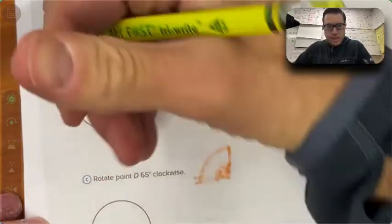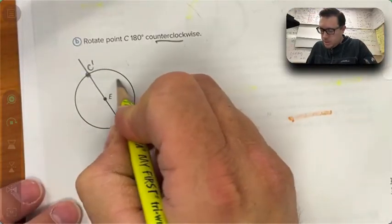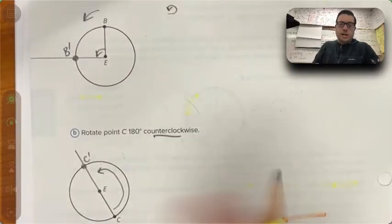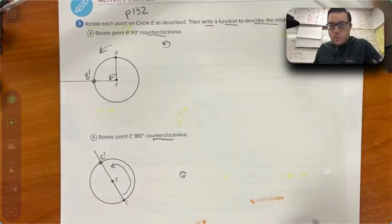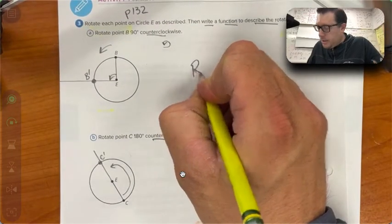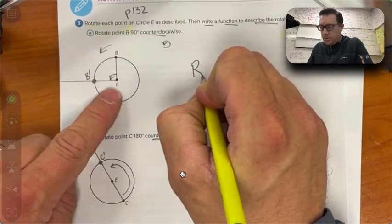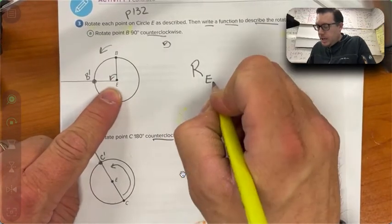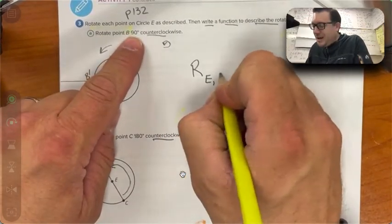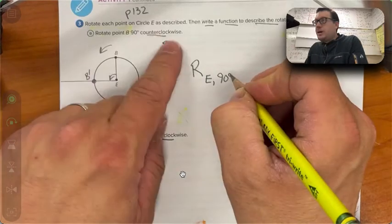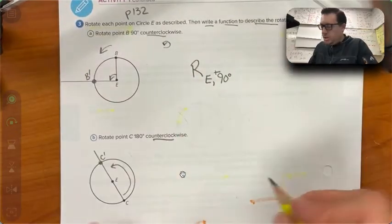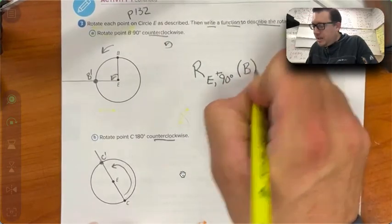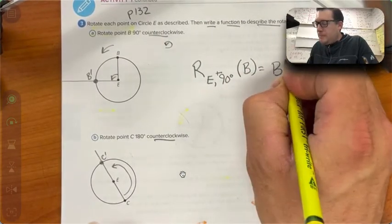I'm going to cut the video here. I'm going to say you need to do part C now. I need to add the notation. For the first one, R, it's a rotation around point E, and it's rotating 90 degrees. Because it's counterclockwise, it's a positive 90 degree rotation of point B, and it's going to go to B prime.